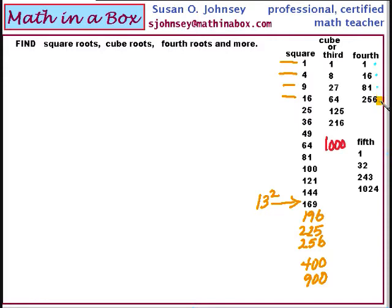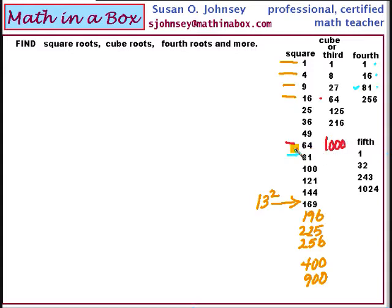You'll notice that 81 is in the fourth power list, but it's also in the squares list. 64 is on the list twice — it's in the squares list and also in the cubes list. 4 cubed is 64, and 8 squared is 64.